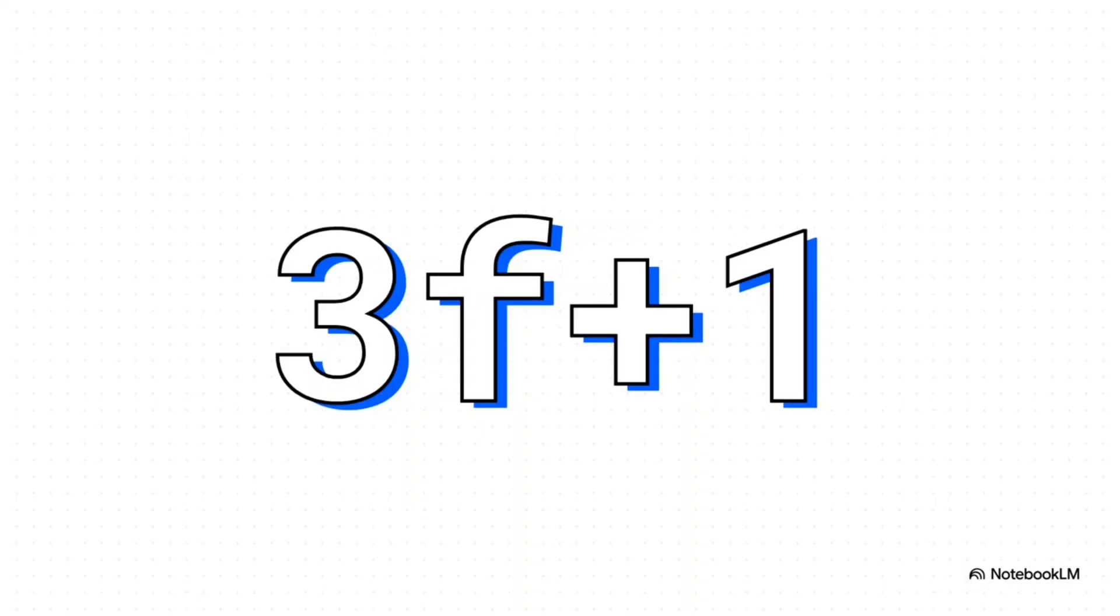This is where they dropped the bombshell. The paper's most famous discovery was this mathematical law: to handle F traitors, you need a minimum of 3F plus 1 total generals. To handle just one traitor, you don't need three generals, you need four. This isn't just a suggestion, it's a mathematical proof. It's impossible otherwise.